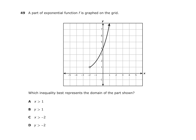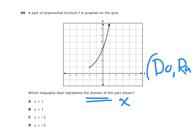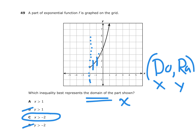Number 49: They're asking for the domain of a part of an exponential function shown on the graph. Remember, domain means x values — so you can eliminate anything that has y. That rules out B and D. Now it's between A and C. Where does the function start? Drawing a vertical line, it starts at x equals negative 2, with an open circle, meaning x is strictly greater than negative 2. So the answer for this one is C.